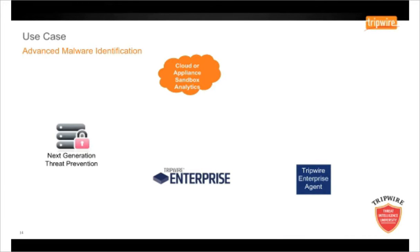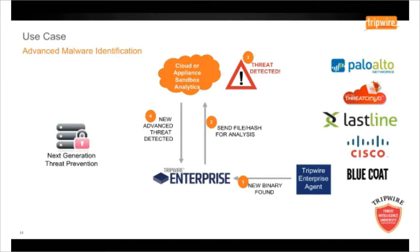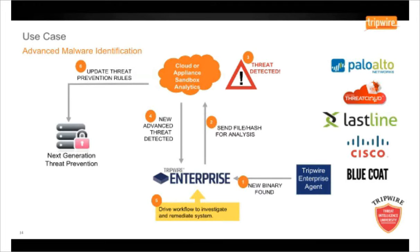Advanced malware identification: identify advanced threats on high-risk assets through integration to malware analytic services and appliances using sandbox technology. Tripwire Enterprise agent on the endpoint detects a new binary introduced to the system. Tripwire Enterprise will then validate the hash and send the file or hash to a cloud threat intelligence provider, such as Palo Alto Networks Threat Cloud, Lastline, Cisco Threat Grid, or Bluecoat. The provider will then analyse the file or hash in their appliance or sandbox environment, and if a new threat is detected, return valuable metadata back to Tripwire Enterprise. Once the intelligence is received, Tripwire Enterprise can then drive a workflow — one of those may be to update threat prevention rules or aid other technologies to conduct real-time blocking of infections on the endpoint.